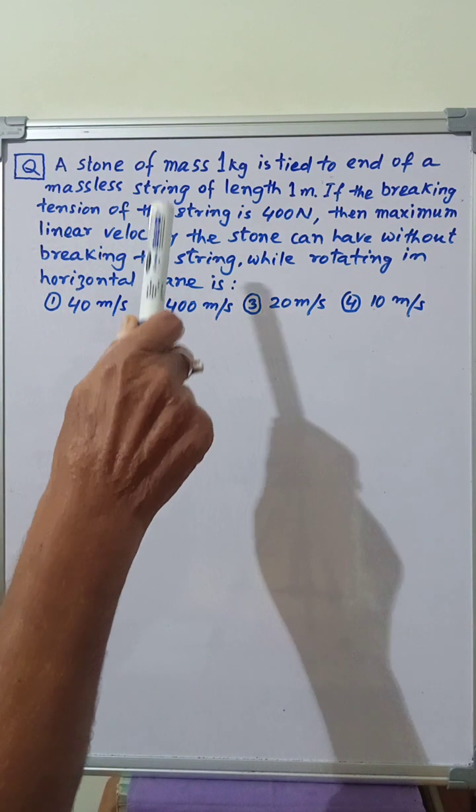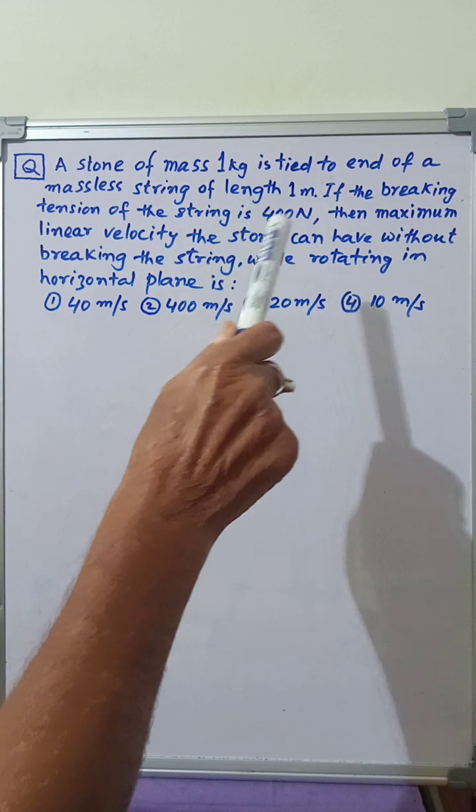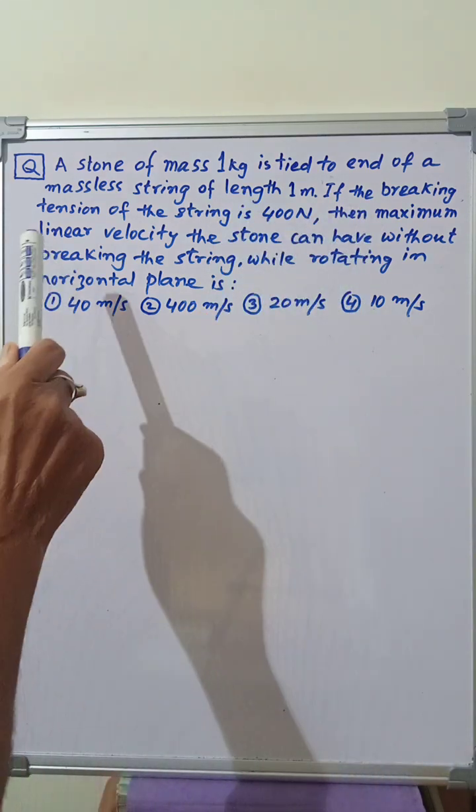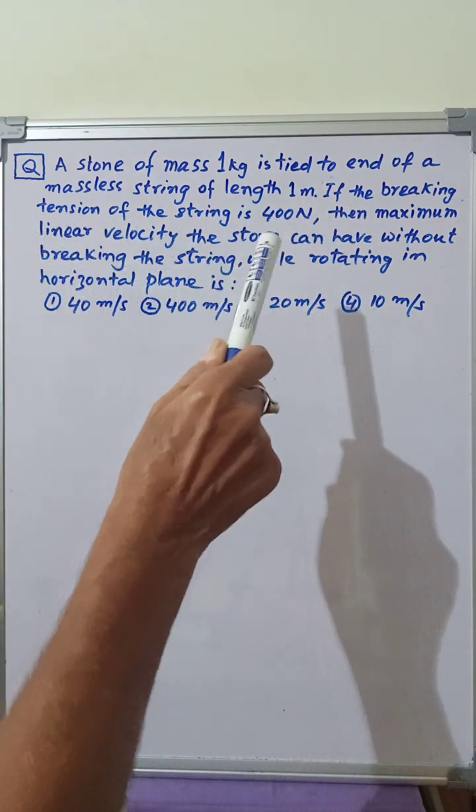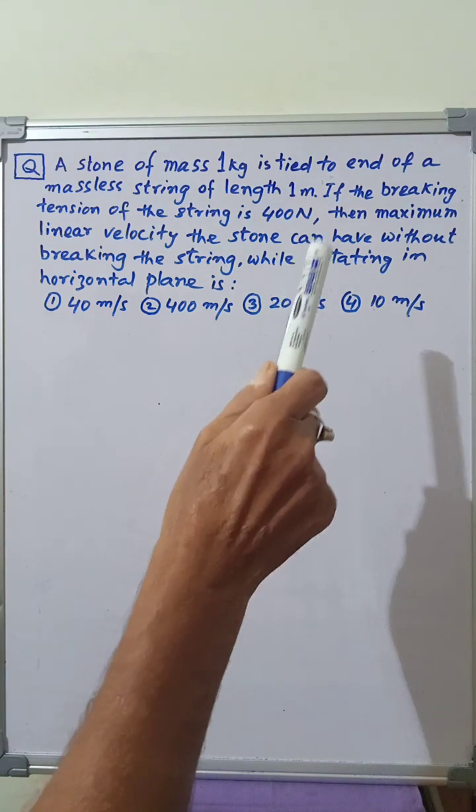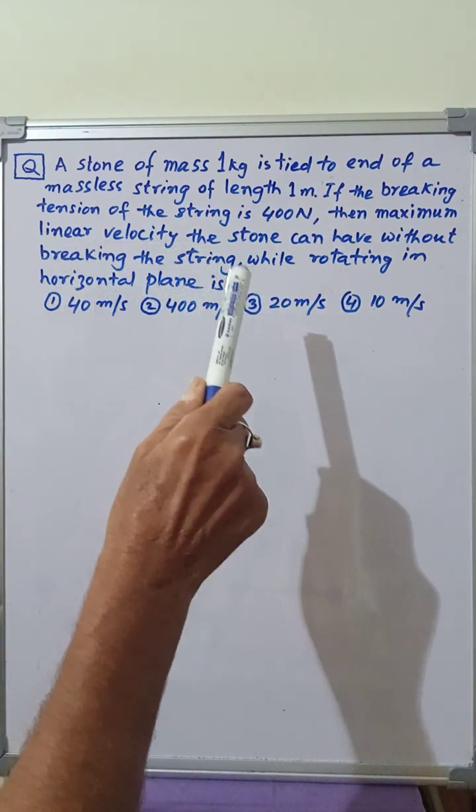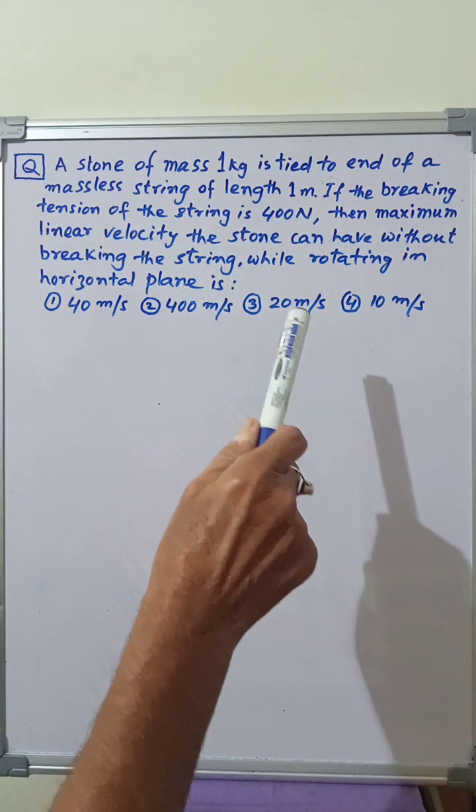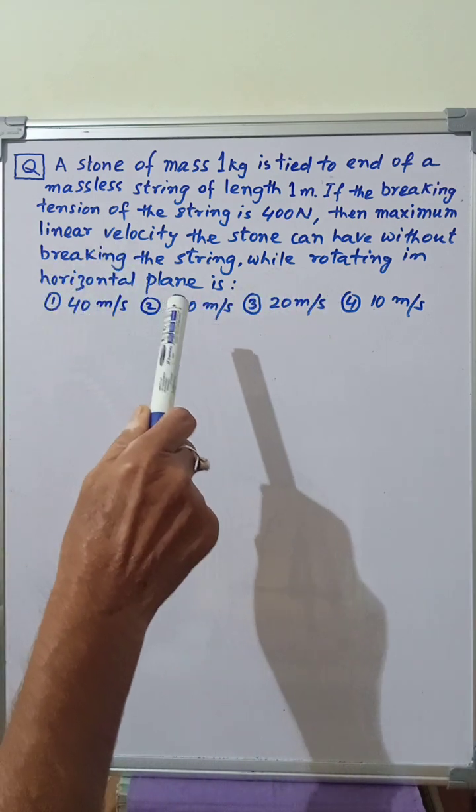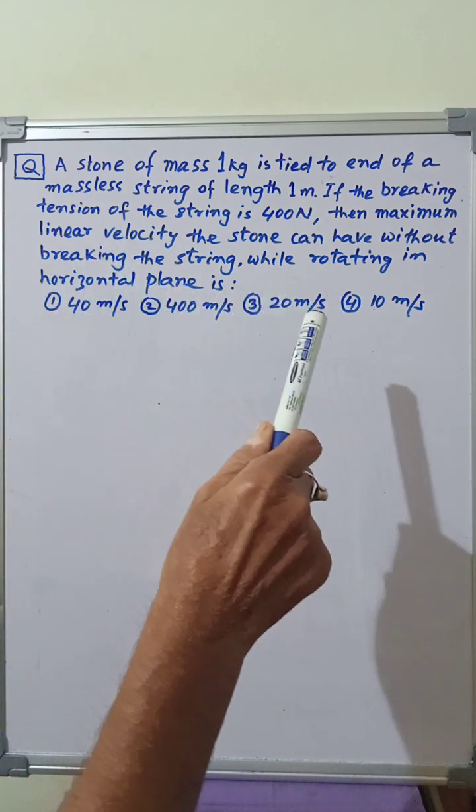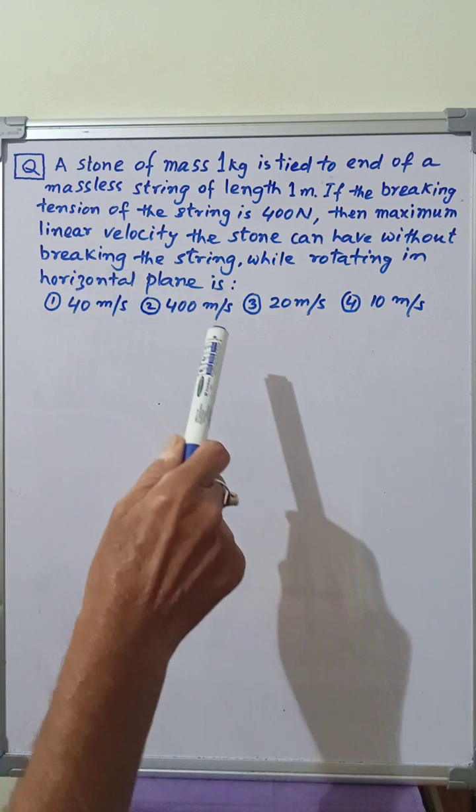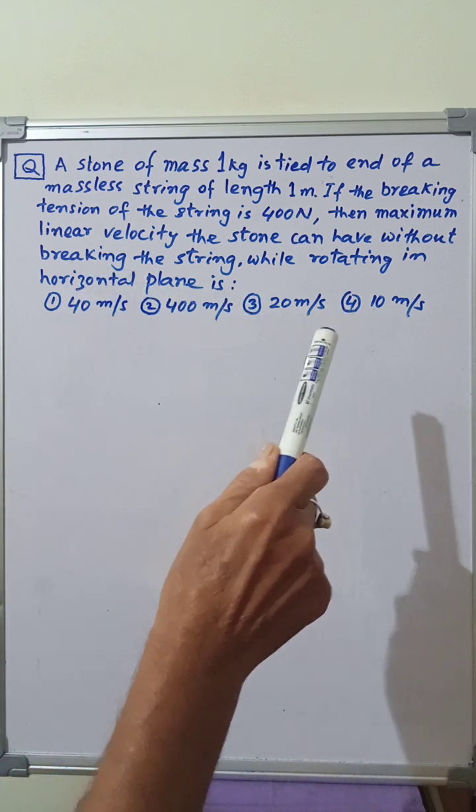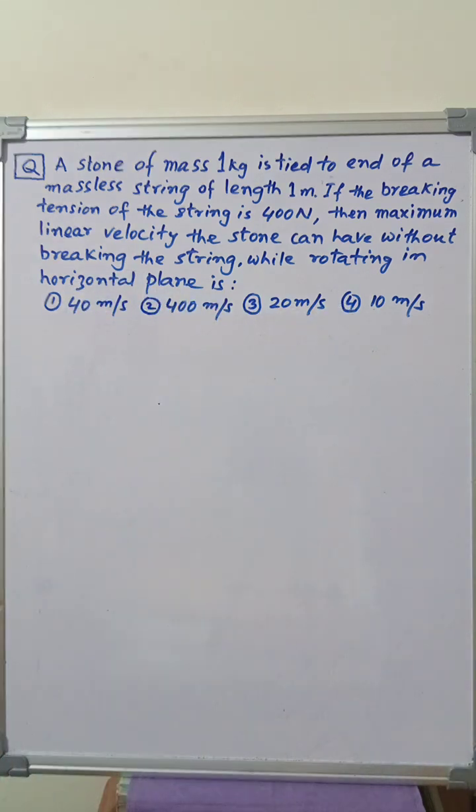A stone of mass 1 kg is tied to the end of a massless string of length 1 meter. If the breaking tension of the string is 400 N, then maximum linear velocity the stone can have without breaking the string while rotating in horizontal plane. The options are given in the question. We are required to find the correct option.